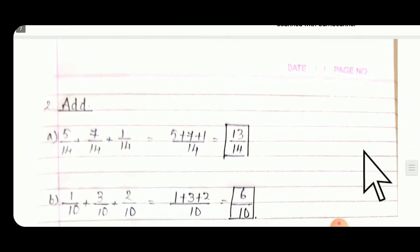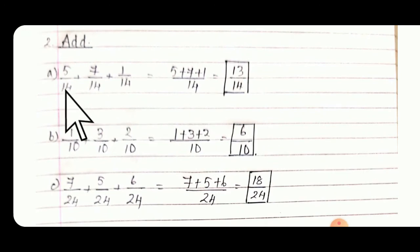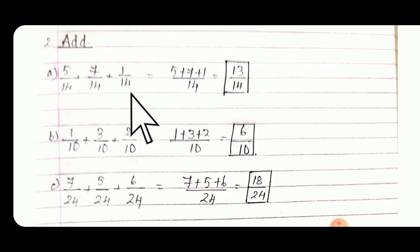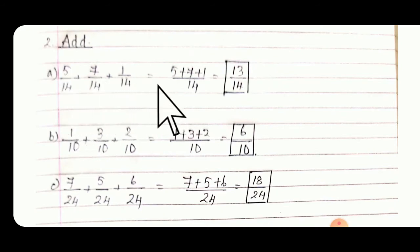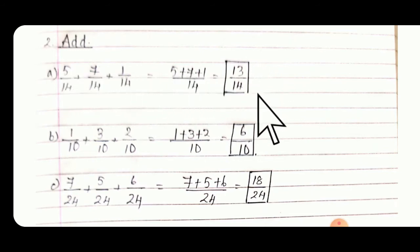Earlier we had 2 fractions; now the number of fractions is increasing. For example: 5/14 + 7/14 + 1/14 — three fractions, all denominators are same. So keep as it is. The numerators are 5, 7 and 1 — add them: it becomes 13/14.